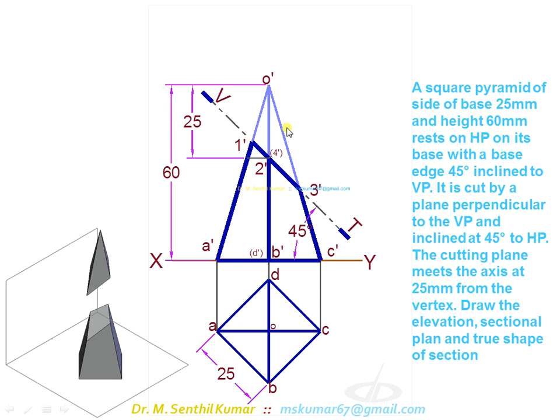Now try to get these four cutting points in top view by drawing projectors. For example, draw projector from 1', get 1 here. 3', draw a projector from 3', get 3 here. But the points 2' and 4' is on ob, o'b', and o'c', but it is seen as vertical line in top view.